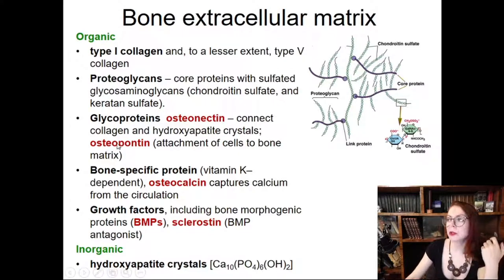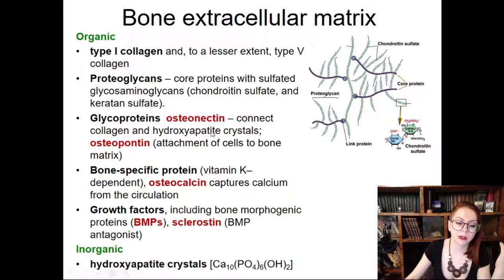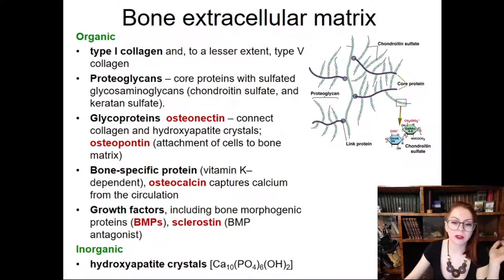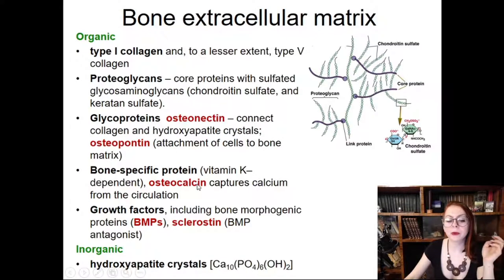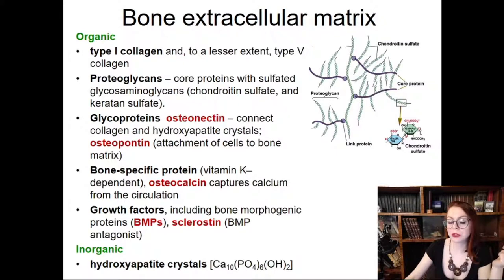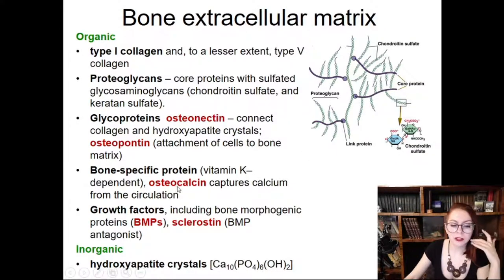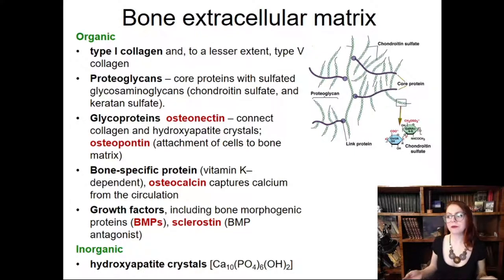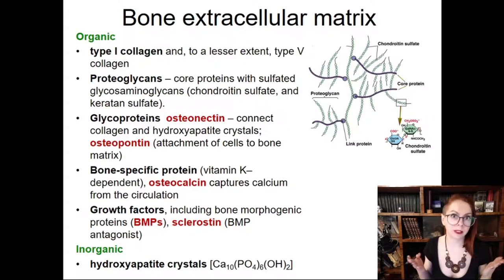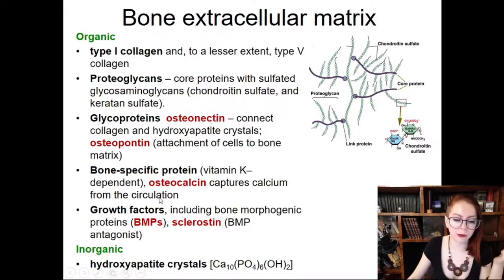Another glycoprotein is osteopontin, which helps to adhere cells to fibers. Together, osteonectin and osteopontin are used to integrate different components of the matrix with one another. We should also remember one bone-specific protein belonging to Gla-proteins: osteocalcin. It has this name because it helps to accumulate calcium locally, providing high local calcium concentration.